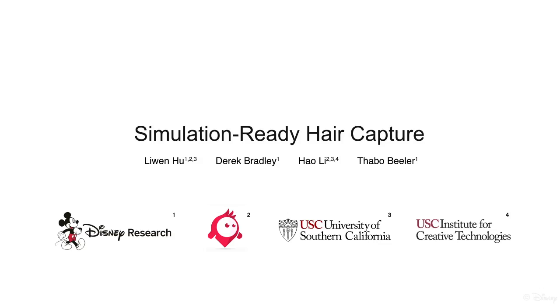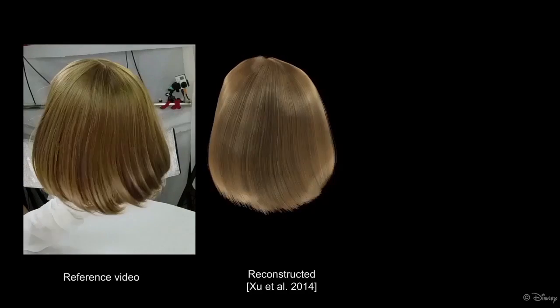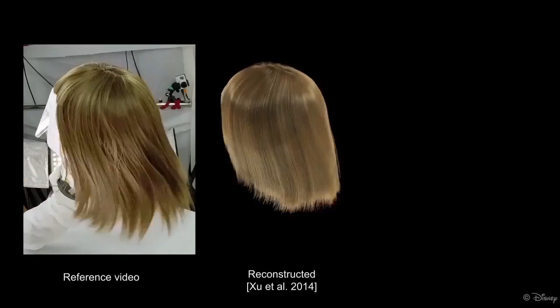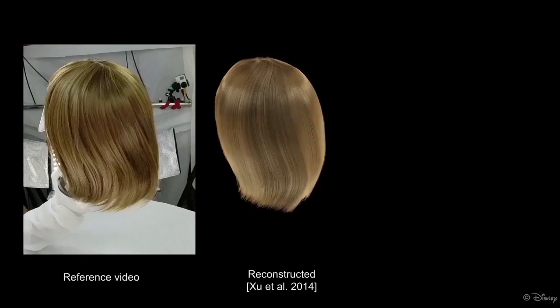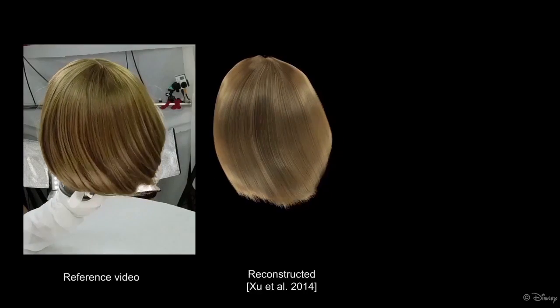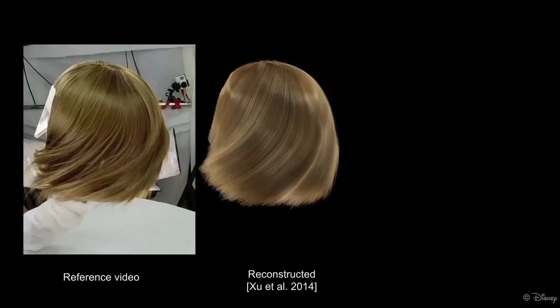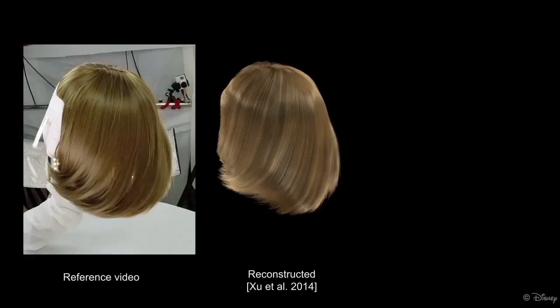We present the first method for capturing dynamic hair and automatically determining the physical properties for simulating the observed hairstyle and motion. Previous work on hair capture focused on reconstructing the hair motion strand by strand. While the results are impressive, the animation can only be played back without the ability to change the motion.